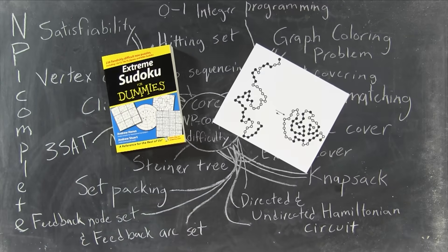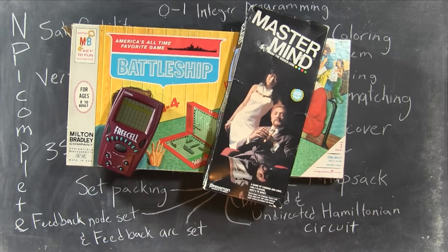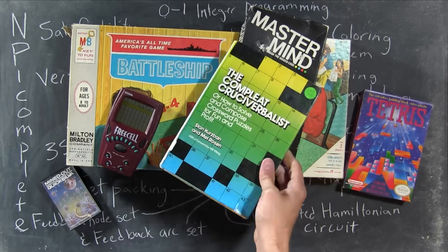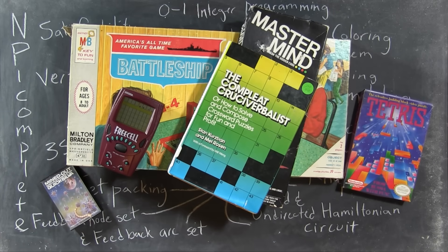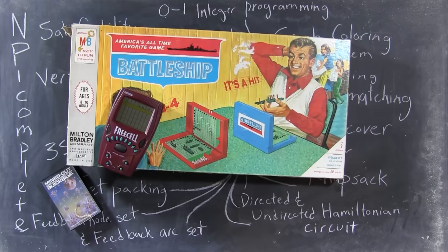These are called NP-complete problems, and since that first batch in the 70s, we've added Sudoku, and protein folding, and problems underlying puzzles and games like Battleship, FreeCell, Mastermind, Tetris, Minesweeper, and making up crossword puzzles. Even classic video games like Super Mario Bros. and Metroid turn out to be connected to NP-complete level traversal problems.